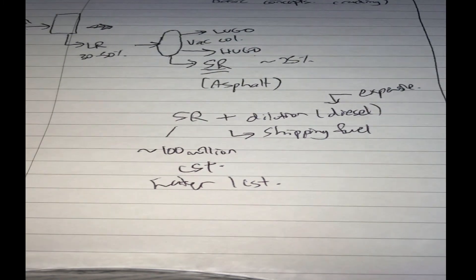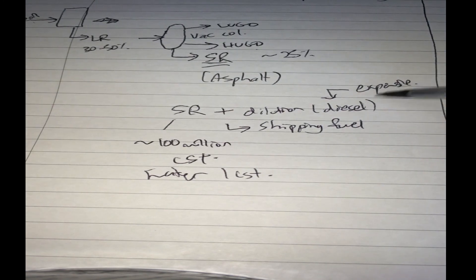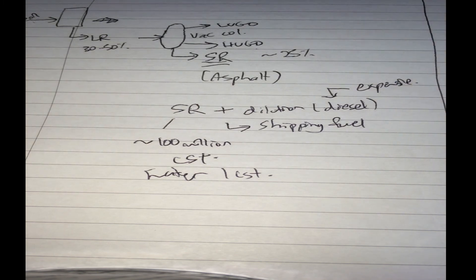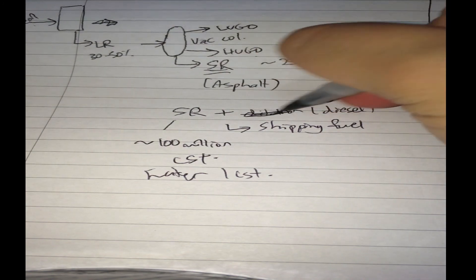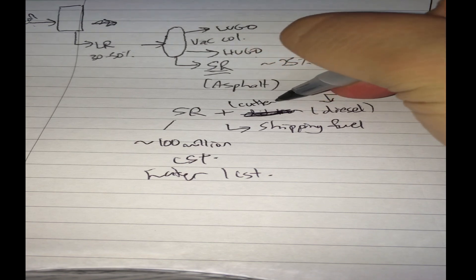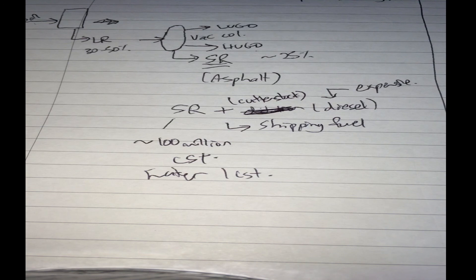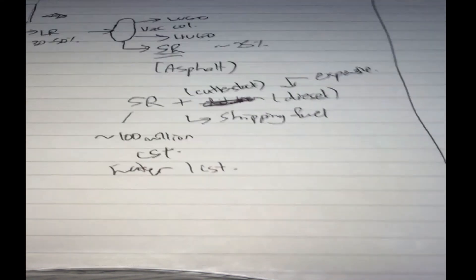So how do you minimize the amount of diesel or gas oil you use to dilute the short residue? This dilution or diluter they just call cutter stock in industry. How do you reduce the amount of cutter stock you need to dilute short residue?